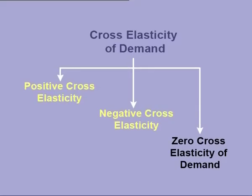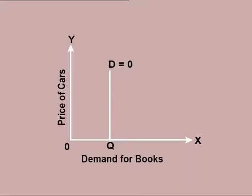Zero Cross Elasticity of Demand: if two products are not at all related — or zero relation exists between them — then these goods are said to have zero cross elasticity. Thus, when the price of one product has no effect on the demand of another, it is termed as zero cross elasticity. For example, the price of cars and the demand for books have no relation between them and so have zero cross elasticity of demand.